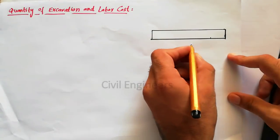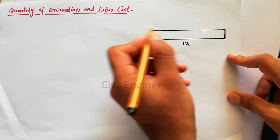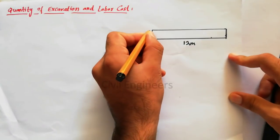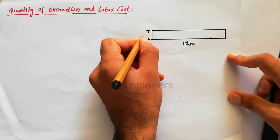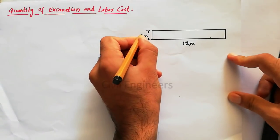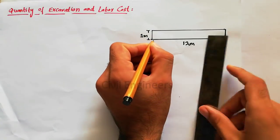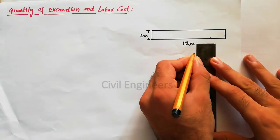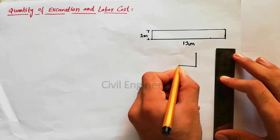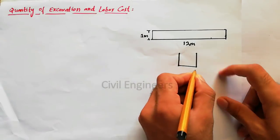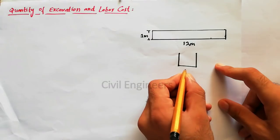The length is 12 meters and the width of the excavation, for example, is 1 meter. And now I have to provide the cross section for this foundation. Suppose this is the cross section, which is simple like this.